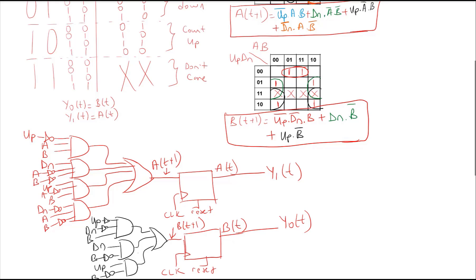Now we can check just one case to verify the circuit is working correctly; you can check the remaining cases yourself. Initially, let's assume we are in the 0,0 state, and assume down is 1 and up is 0. So the next state should be 1,1.